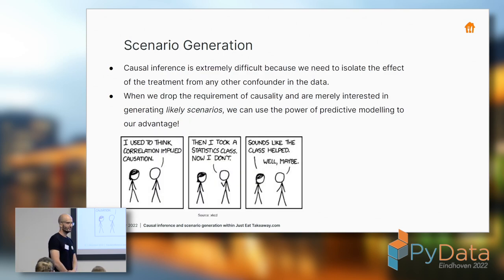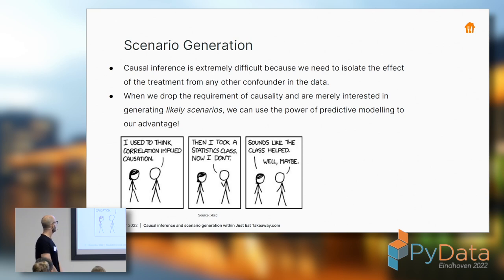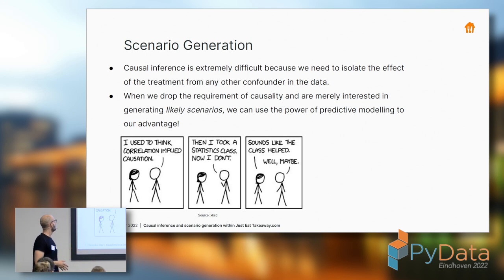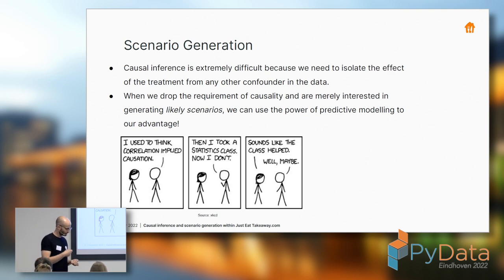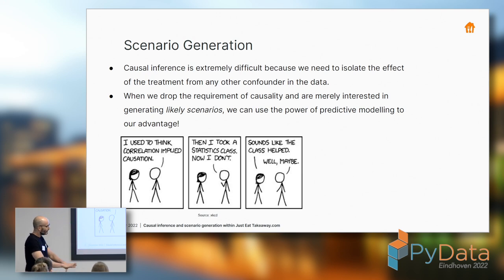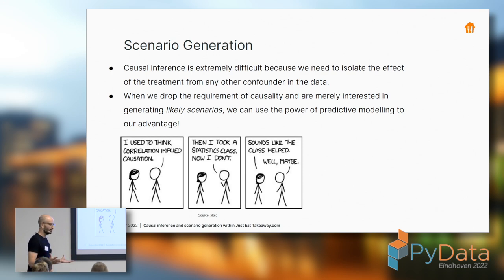Now I'm going to shift attention from causal inference to something completely different: scenario generation. Causal inference is extremely difficult because we're trying to isolate a treatment effect from every other confounder present in the data — and you never really know whether you found the right treatment effect because we can't directly observe it. If we drop the requirement of causality and just want to predict likely outcomes, we can use the power of predictive modeling to our advantage.